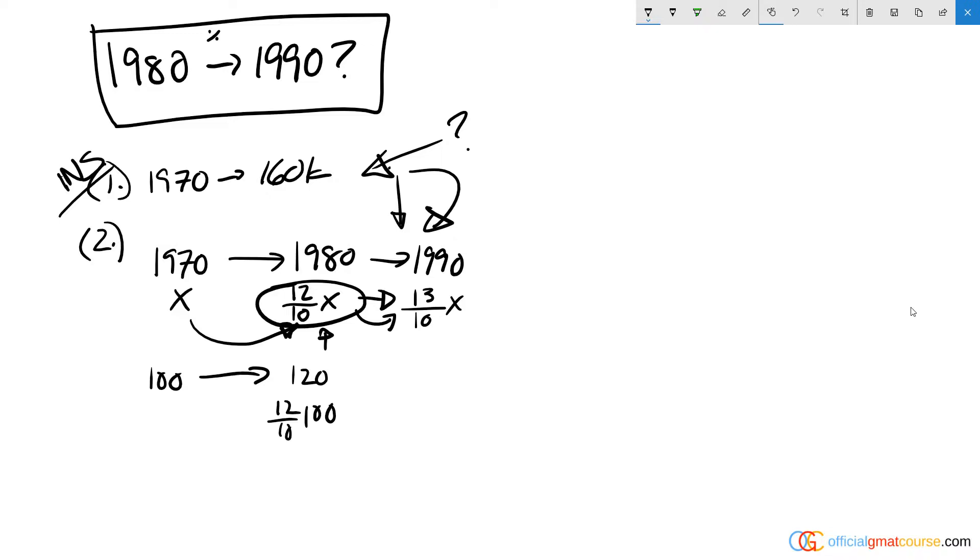And actually we can, because percent change is the new minus the old over the old. And if you look at this, when we simplify the top, we get 1 tenths X over 12 tenths X. And the X's are going to cancel and we end up with 1 tenths over 12 tenths, which is equivalent to 1 over 12. And that is the percent change that we would get from 1980 to 1990 based on the information we were given.